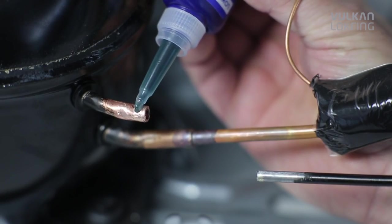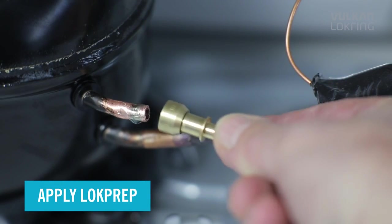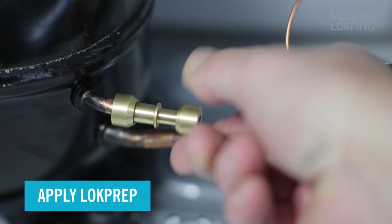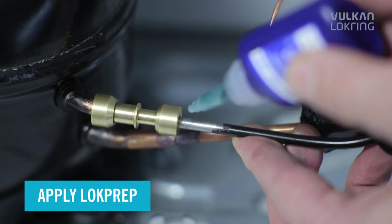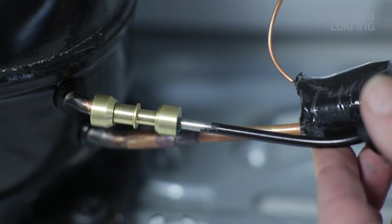Then apply lock prep evenly to the entire tube circumference. Lock prep penetrates even the finest cavities, fills them completely and thus makes the connection 100% airtight.